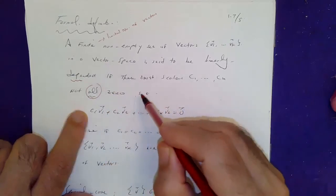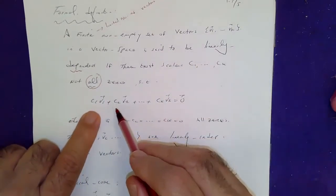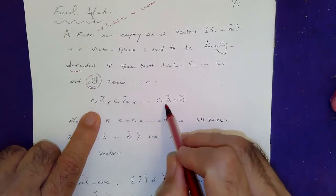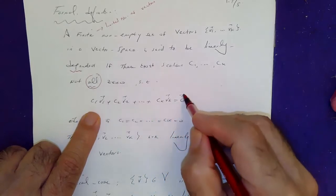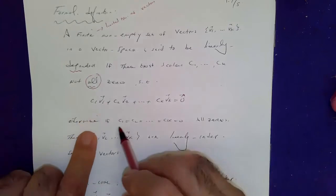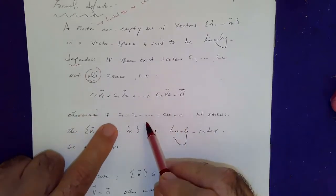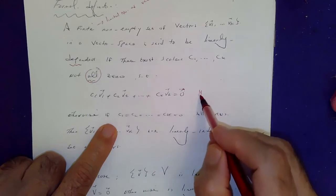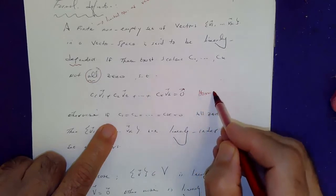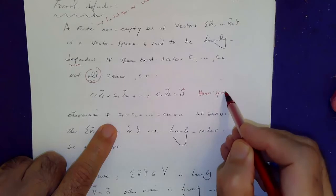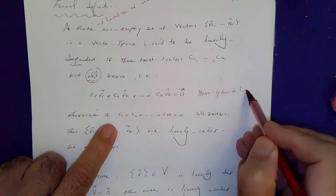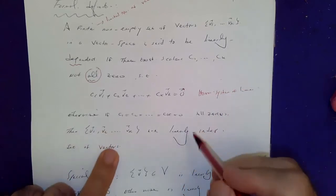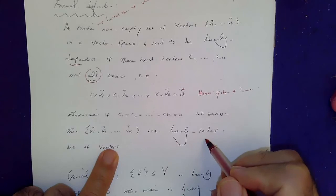Such that C1V1 plus C2V2 plus all the way CKVK is equal to zero. So if all the C's happen to be zero by solving this so-called homogeneous system of linear equation, then they are linearly independent.